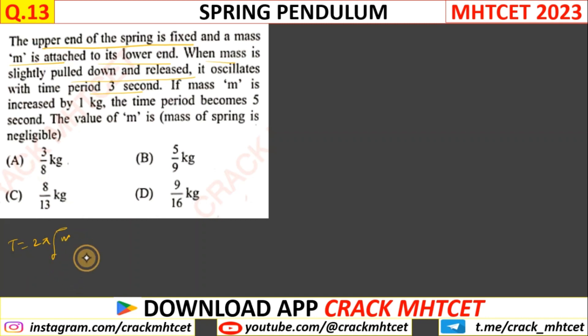So spring pendulum formula, T equals 2π root m by k. T is directly proportional to root of m. So this is your initial formula.